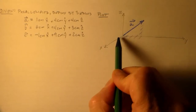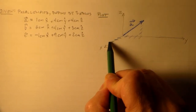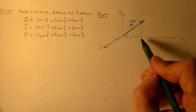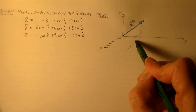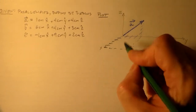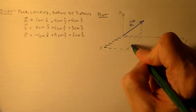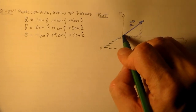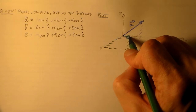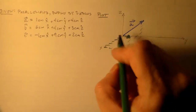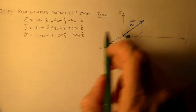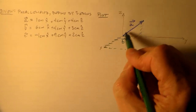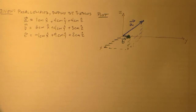Vector B is six centimeters in the x direction, way over here, then four centimeters in the y direction, and up three centimeters in z. In this two-dimensional representation it looks kind of short, but it's actually fairly long — longer than the other one. This face is actually fairly large, it just doesn't look so large.